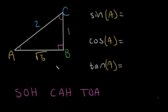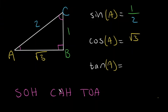For sine, we're going to be using SOH — opposite over hypotenuse. Opposite from A is going to be 1, and then we divide by our hypotenuse, which is 2. So sine of A is going to be 1/2. For cosine of A, our adjacent side is the square root of 3, and we divide by our hypotenuse, which is 2. So cosine of A is the square root of 3 divided by 2.